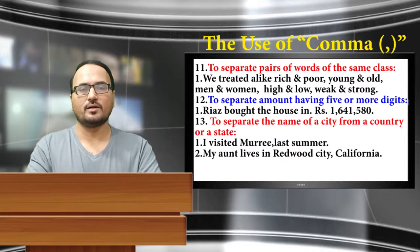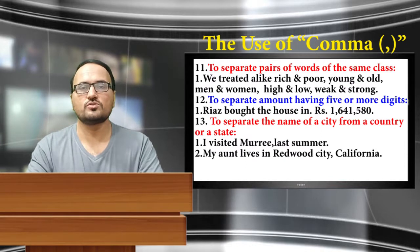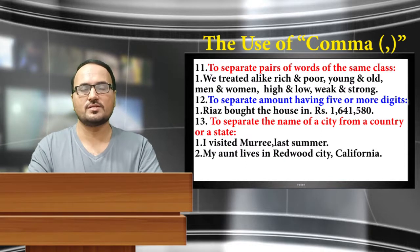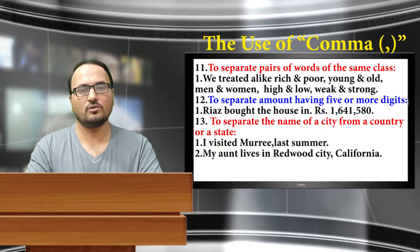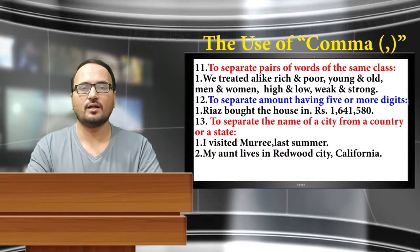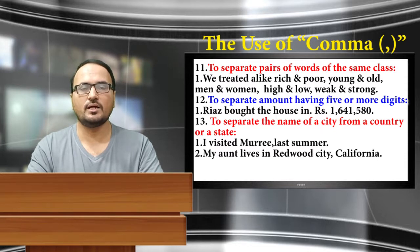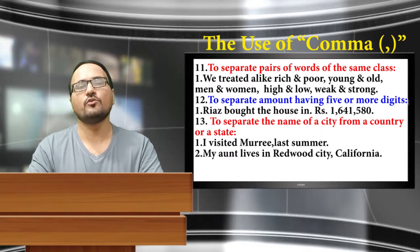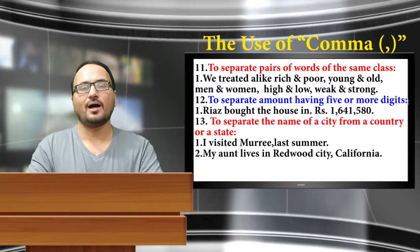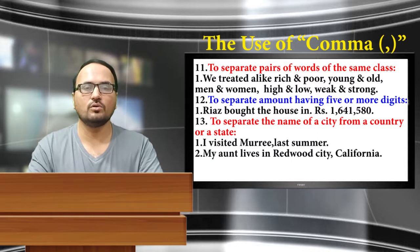The eleventh use of comma: it is used to separate pairs of words of the same clause. Example: We treated alike rich and poor, young and old, men and women, high and low, weak and strong.